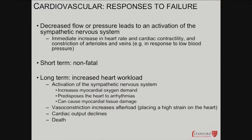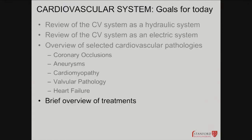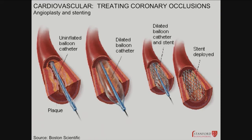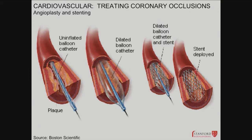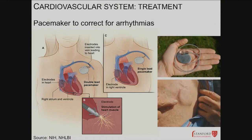For treatment of occlusions: a wire is inserted from the femoral artery up to the heart to break the plaque using a balloon or stent deployment. Various drugs are also used. Bypass surgery takes a vessel from the leg or the mammary artery to create a conduit — you leave the diseased vessel in place and create a bypass. Circulation takes the path of low resistance, which is how bypasses work. For electrical problems, pacemakers and implanted devices can be inserted to help control the heart better.